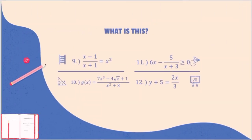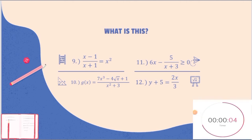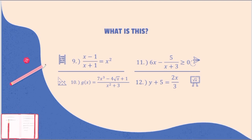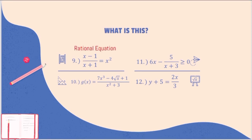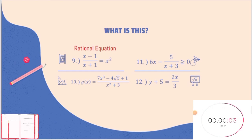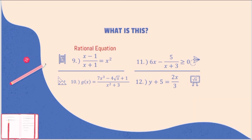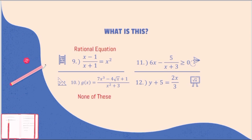We are now on number 9. Number 9 is a rational equation. How about number 10? At first glance, it looks like a function. However, if you look at the numerator, there is a presence of a radical symbol. Therefore, this is none of these.